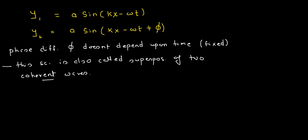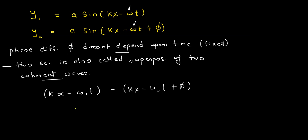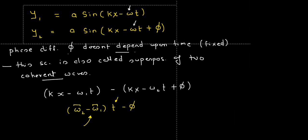What are coherent waves? Coherent waves are those for which the phase difference doesn't depend on time. This happens only when frequencies are equal. If frequencies are not equal — say kx minus ω₁t and kx minus ω₂t plus φ — you can see the phase difference depends on time. It will be independent of time only when the two frequencies are equal. Now take these two waves and superpose them.